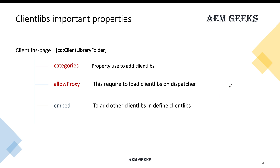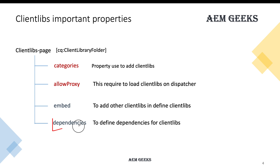The 'dependencies' property is used when your client library's functionality depends on some other client library that needs to be loaded before yours. For example, if your client library B depends on client library A, you put A in the dependencies property so it loads before B. Both 'dependencies' and 'embed' are multi-value properties, so you can include more than one client library.